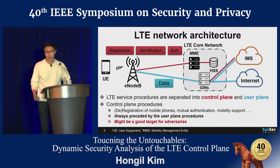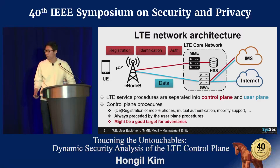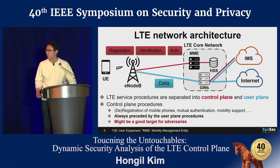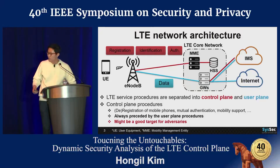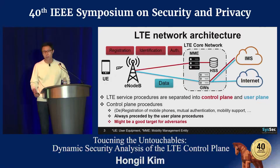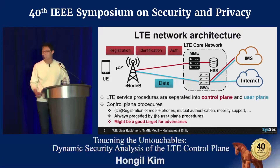The key point is that control plane procedures in LTE always come before the user plane procedures. So if there is a single failure during the control plane procedures, the whole LTE service won't be provided to users. From the attacker's perspective, finding and exploiting vulnerable points in the control plane is the easiest way to deny or hack LTE services.